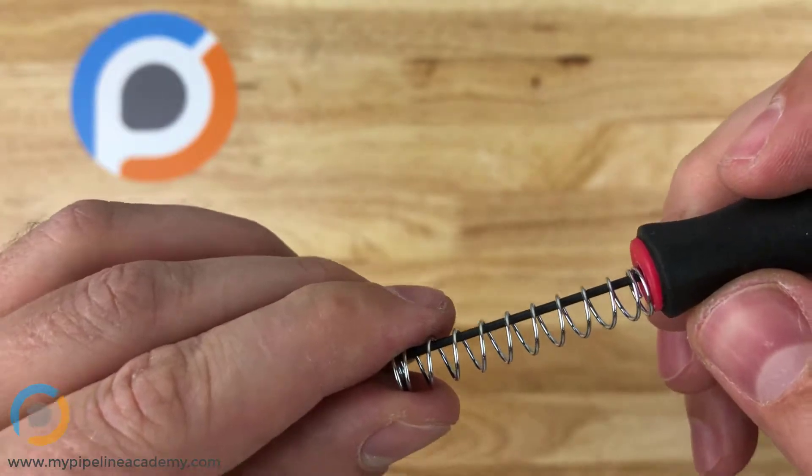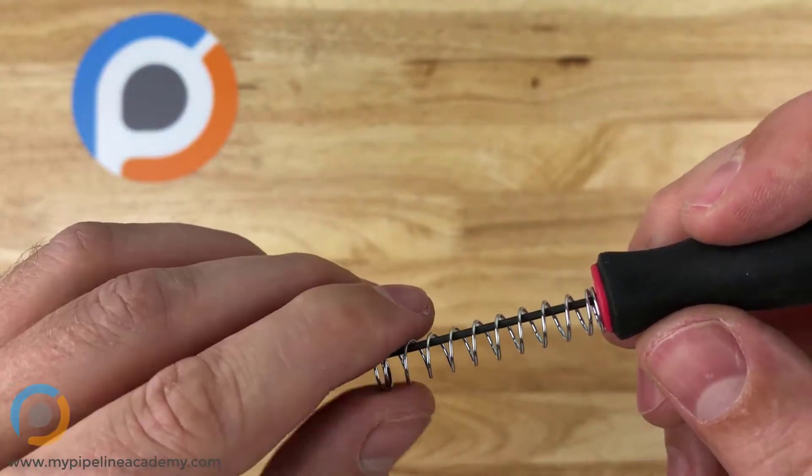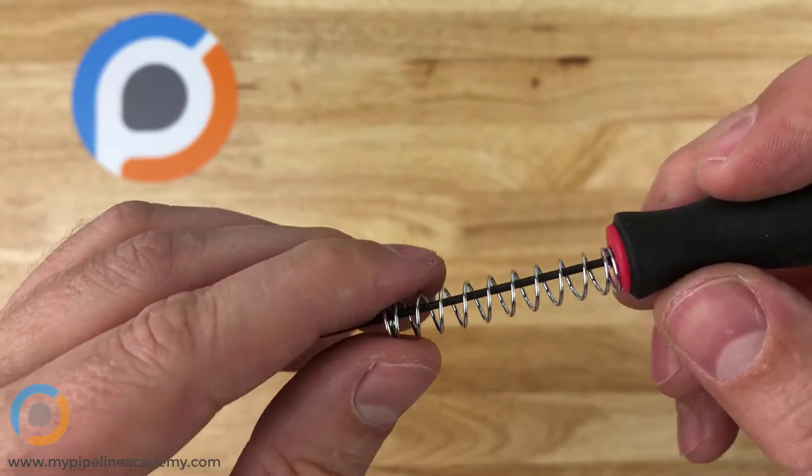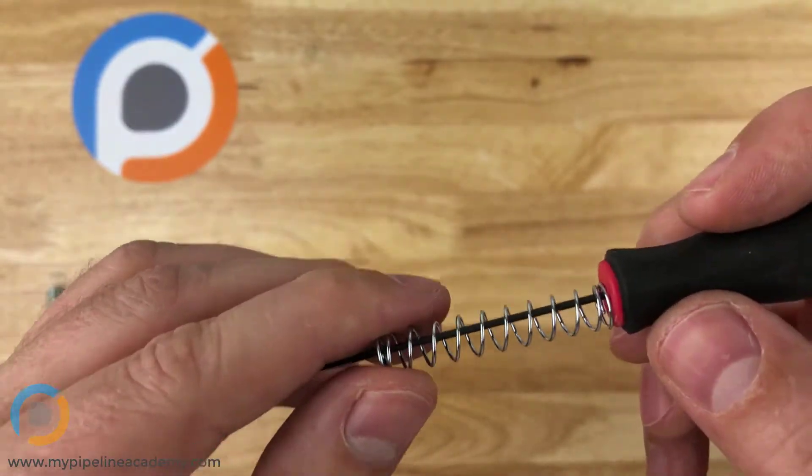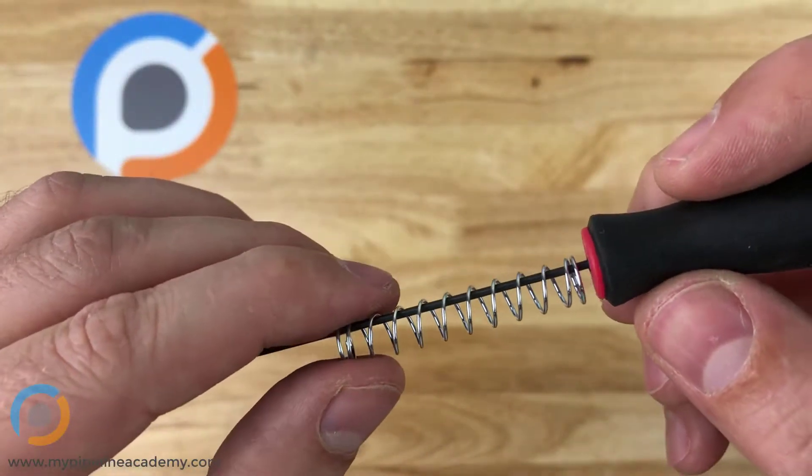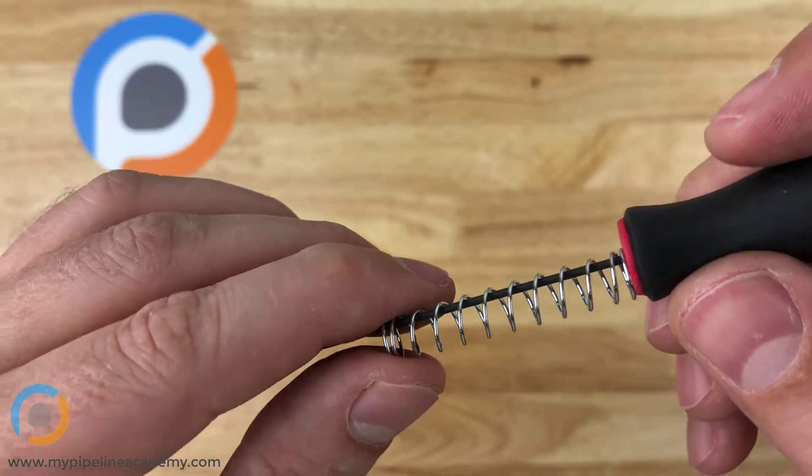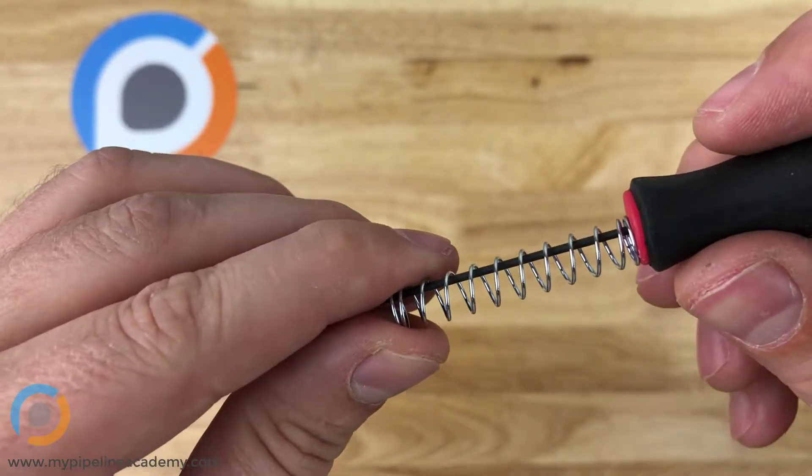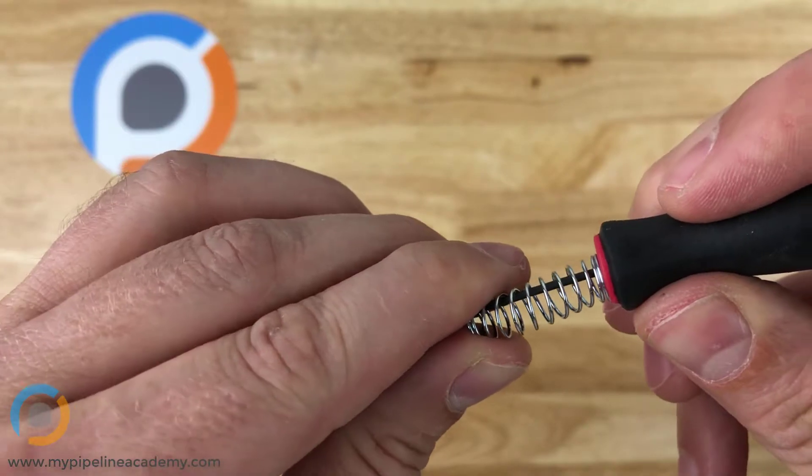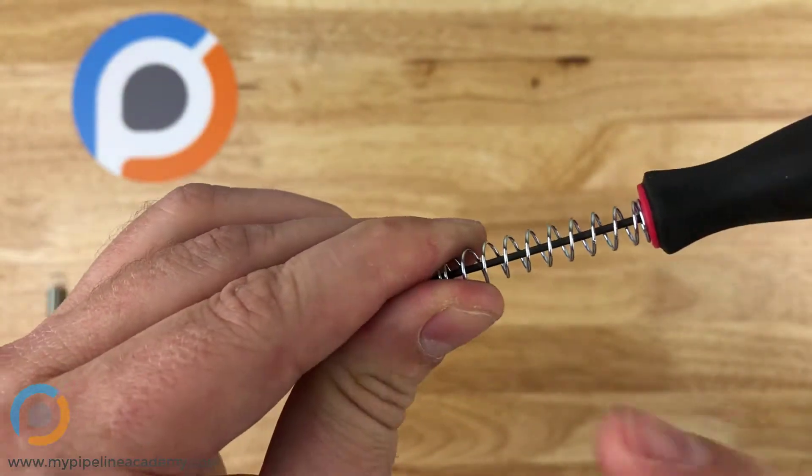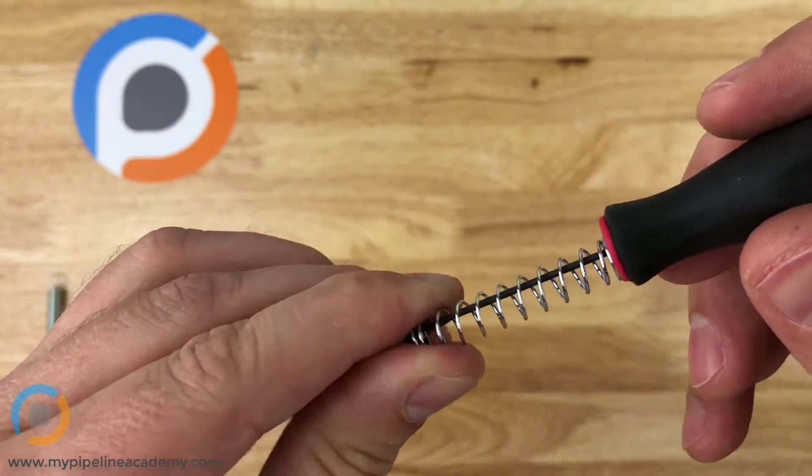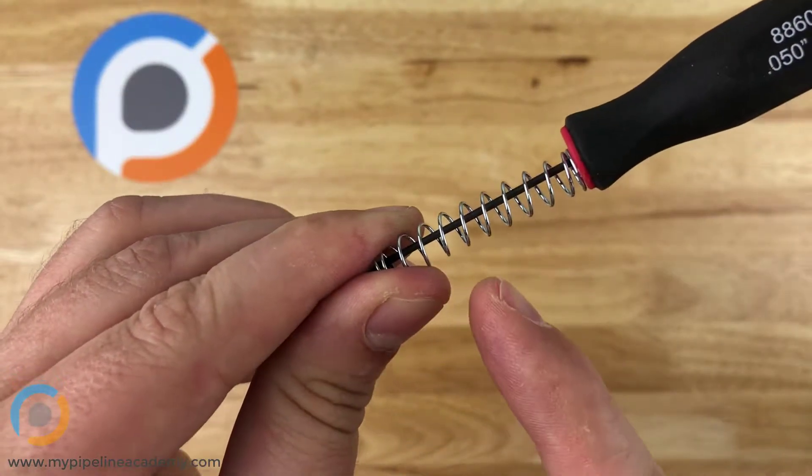Now you could implement some kind of force gauge in there, some kind of load button cell. But that's expensive and a pretty high-tech solution. Our low-tech solution was to use a spring and then calculate at what amount of compression we'd get two pounds of force.